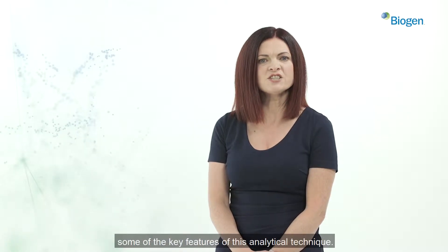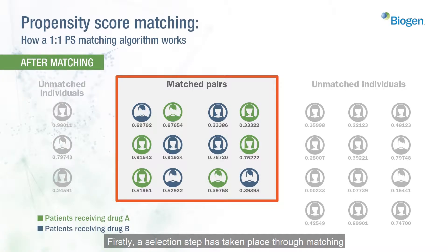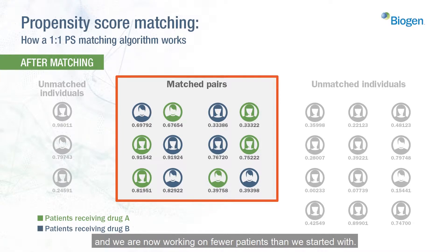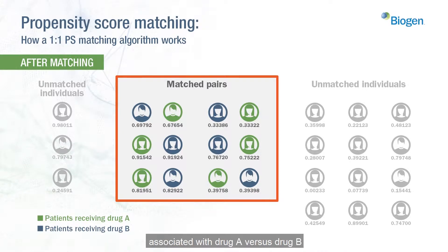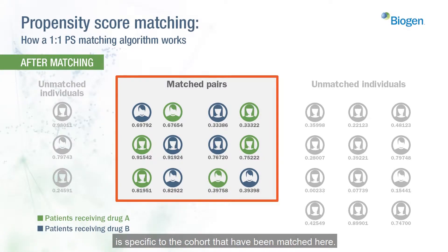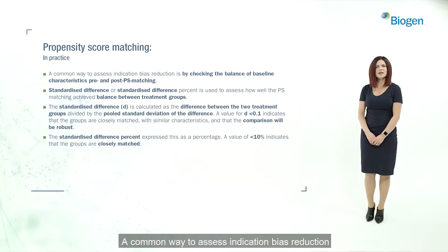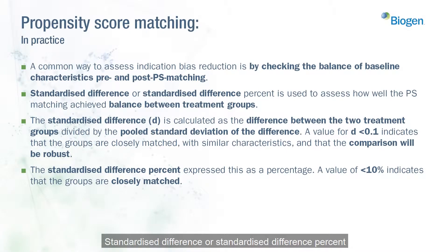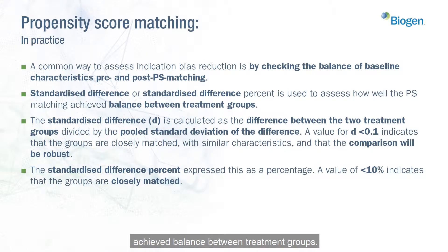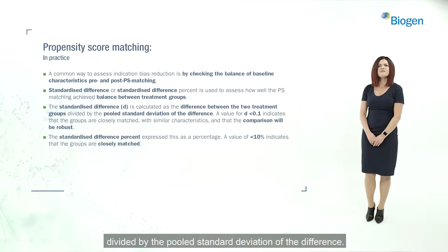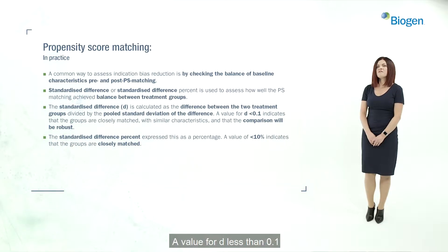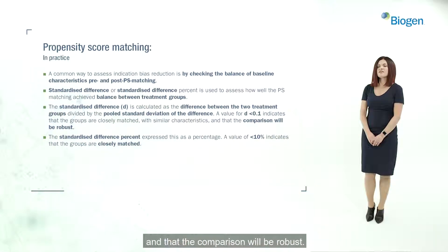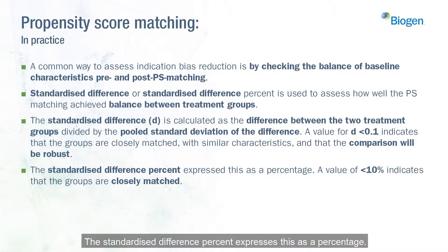It is also important to notice some of the key features of this analytical technique. Firstly, a selection step has taken place through matching and we are now working on fewer patients than we started with. Secondly, the analysis of treatment effect associated with drug A versus drug B is specific to the cohorts that have been matched. A common way to assess indication bias reduction is by checking the baseline characteristics pre and post propensity score matching. Standardised difference — or standardised difference percent — is used to assess how well the propensity matching achieved balance between treatment groups. A value of D less than 0.1 indicates that the groups are closely matched, and a standardised difference percent of less than 10% also indicates closely matched groups.